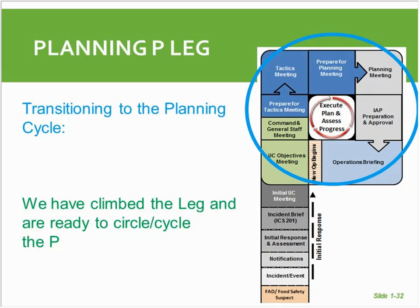A question asks: I understand the 201 is used as your initial IAP — how complex does the IAP become with multiple premises involved, perhaps 30-plus, with maps, on-scene organizations, et cetera? The larger your incident, the larger your IAP will be. The major part of the incident action plan that grows is the 204 form — the operational assignment list — which contains the actual tactics being carried out during that operational period. In the next module of this planning P, we'll go over building the incident action plan and all the forms that go into it. As your incident becomes more complex with more infected premises and more field and tactical activities, you have multiple pages and pages of those 204 forms — that's the major area where your incident action plan grows.